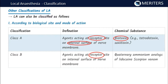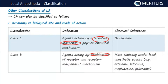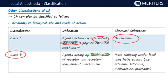Class B also acts through a receptor, but on the internal surface of the nerve membrane. Examples include quaternary ammonium analogues of lidocaine and scorpion venom. Class C acts by a receptor-independent physicochemical mechanism. Benzocaine is the key example — a clinically used anesthetic that acts by a receptor-independent mechanism, which is an important NEET exam question.